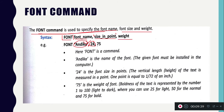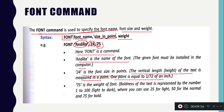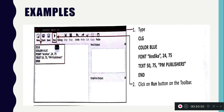Weight means how thick the font is — its boldness. For example: font Anadika, 24, 75 — where Anadika is the name of the font and must be installed in your computer, 24 is the font size measured in points (one point equals 1/72 of an inch), and 75 is the weight, which represents the boldness of the font.